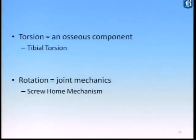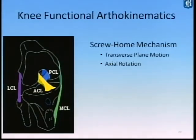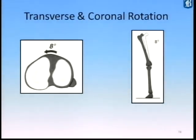So: torsion is an osseous component such as tibial torsion or femoral neck angle for retroversion and antiversion. Rotation is purely joint mechanics, and in the lower extremity we have to be very aware of the screw-home mechanism. Reviewing functional knee arthrokinematics — the screw-home mechanism means there is an 8-degree change in rotation in the transverse plane as we unlock it.